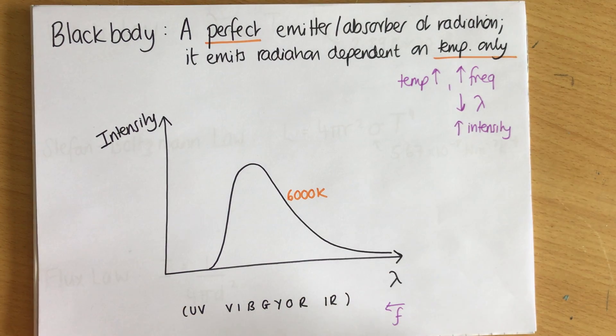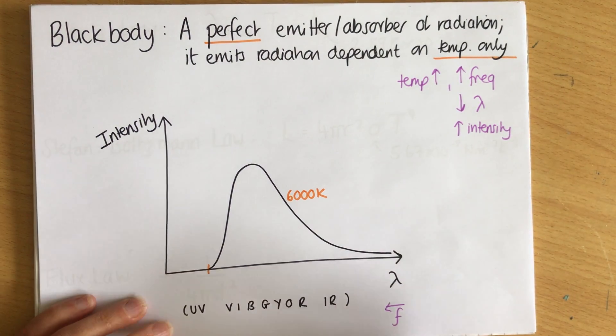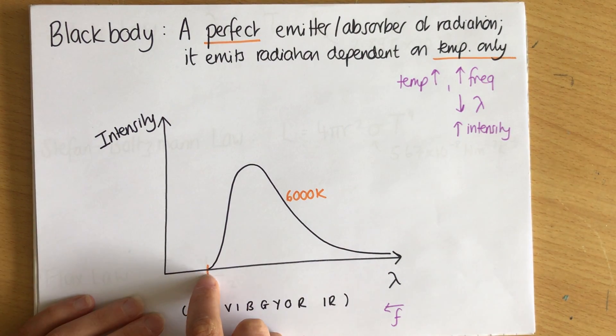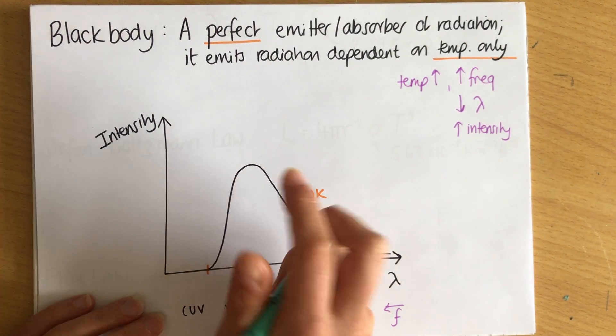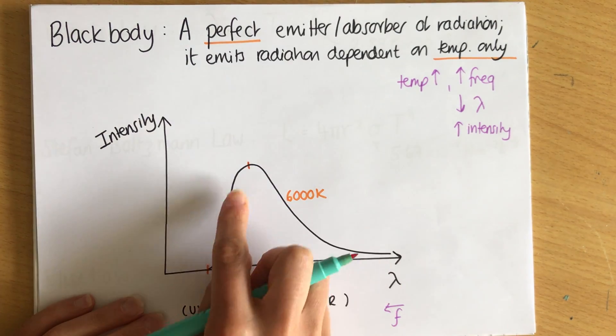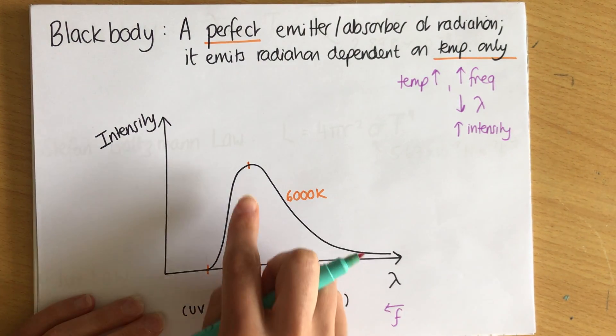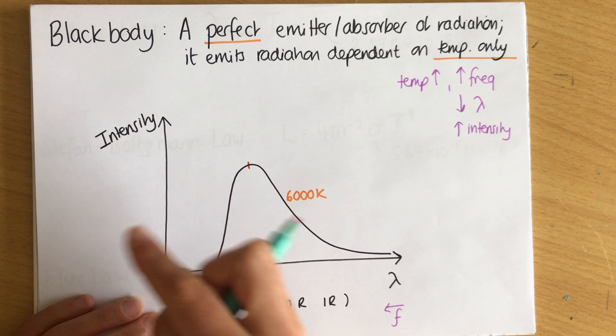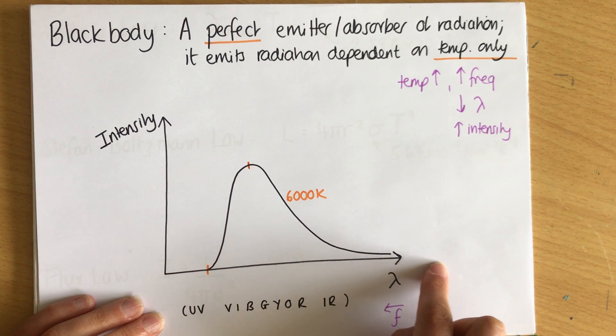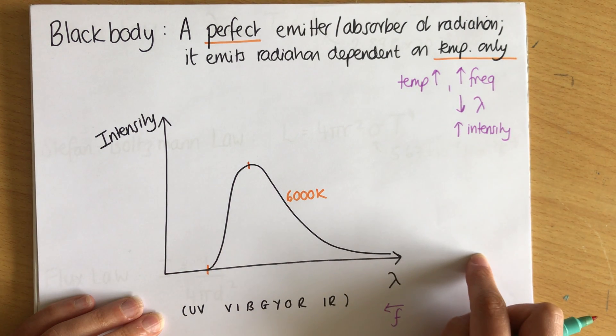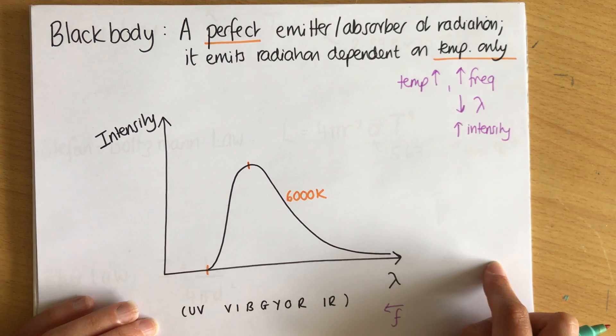Now the shape, the things to look out for, it has a definite start, so at this point here it meets the x-axis. It has an asymmetric peak here, so it's not a symmetric curve, it's an asymmetric curve with the peak on the left. And then it doesn't actually hit the x-axis further along, on this side, it's asymptotic.